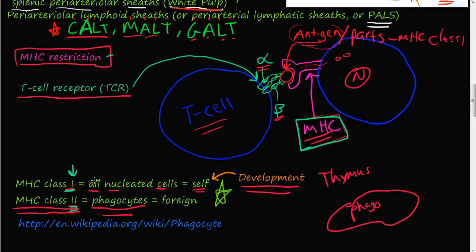MHC class 1 is on all nucleated cells — every nucleated cell in your body has a major histocompatibility complex class 1. What it does is this: a nucleated cell produces proteins, molecules, chemical signals — it's undergoing normal life. Little byproduct parts get broken down and shipped up to this MHC class 1 complex, where they're displayed in a binding groove.